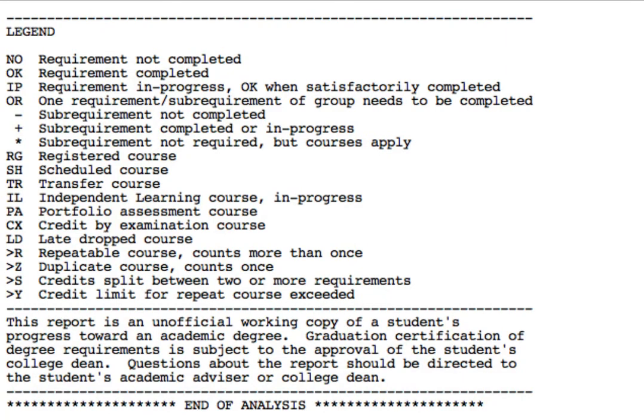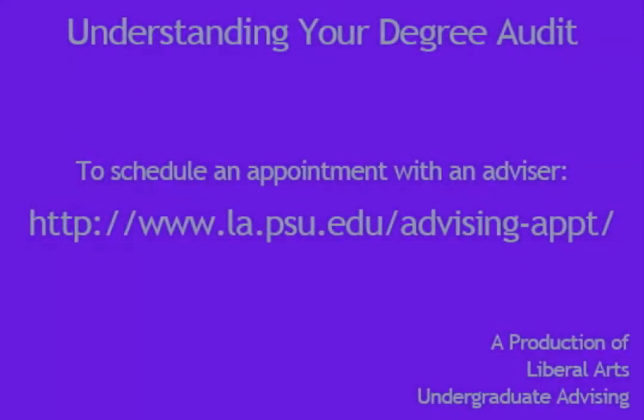If you are unsure of any abbreviations used throughout the audit, refer to the legend at the bottom of the page. The degree audit is the roadmap for completing your degree requirements, and it is critical that you learn to use this important tool. When meeting with your advisor you should bring a recently printed and up-to-date degree audit, so that you and your advisor can assess your progress accurately. We hope this video has been helpful.